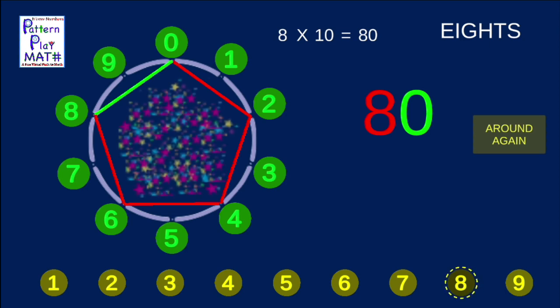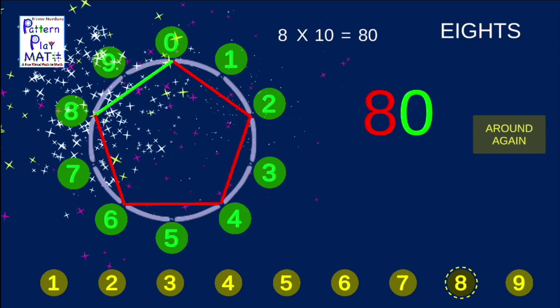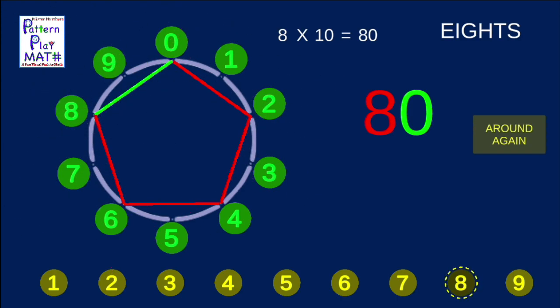8, 6, 4, 2, 0. You made pentagons with the 2s and the 8s. Try other numbers and see what patterns you make with those. Have fun!